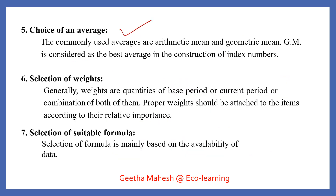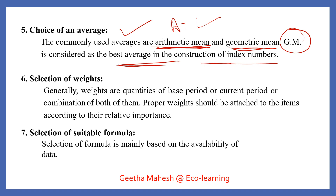The next step is the choice of an average. You can use different averages such as arithmetic mean, median, mode, geometric mean, harmonic mean, or weighted mean. However, the geometric mean is considered the best average for the construction of index numbers and is most commonly used.